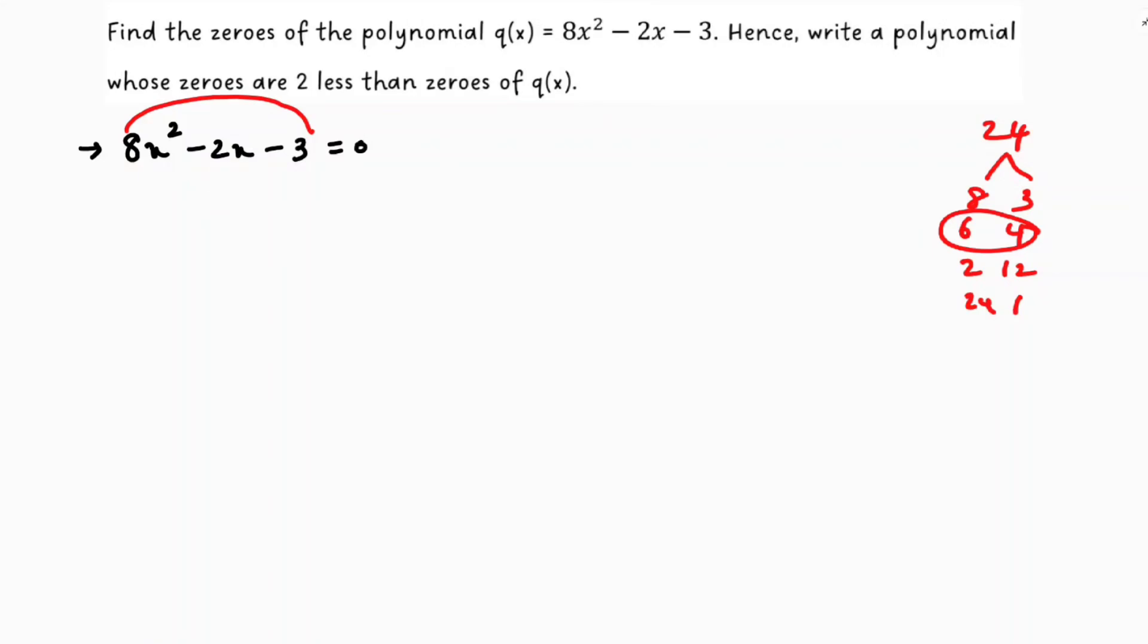So here 8x² - 6x + 4x - 3 = 0. In the first two terms I can take 2x common, so 4x - 3, plus 1 if I will take common, 4x - 3 because nothing is possible to take common.